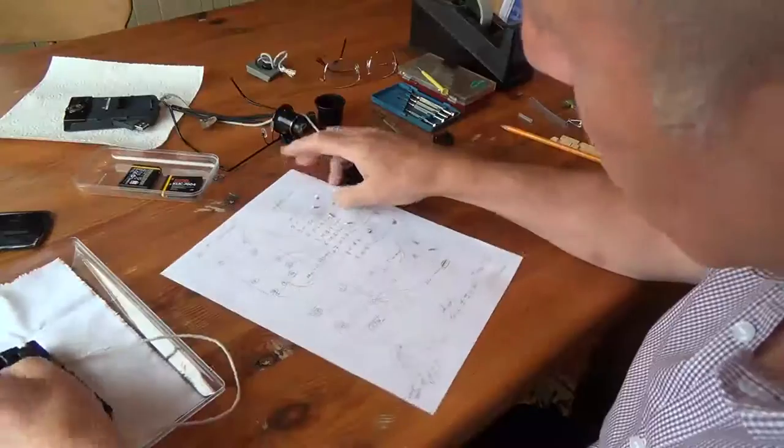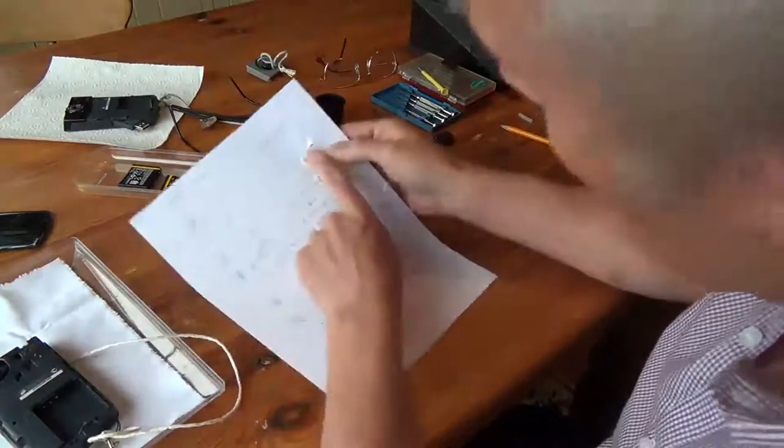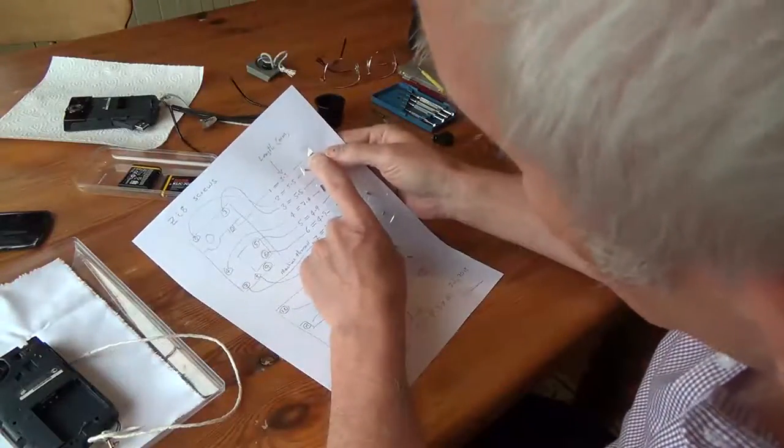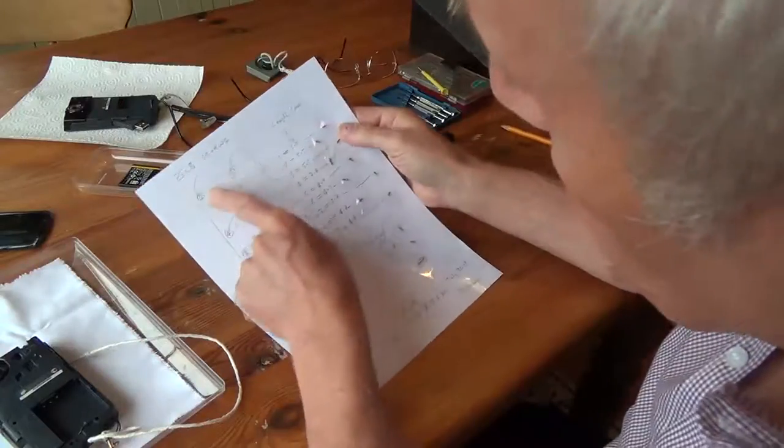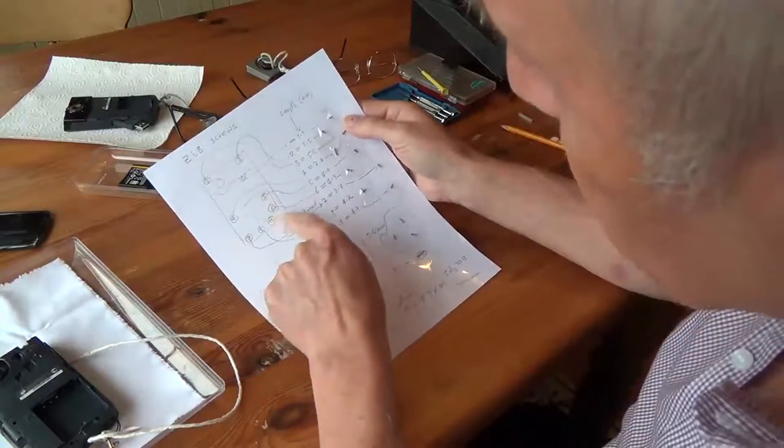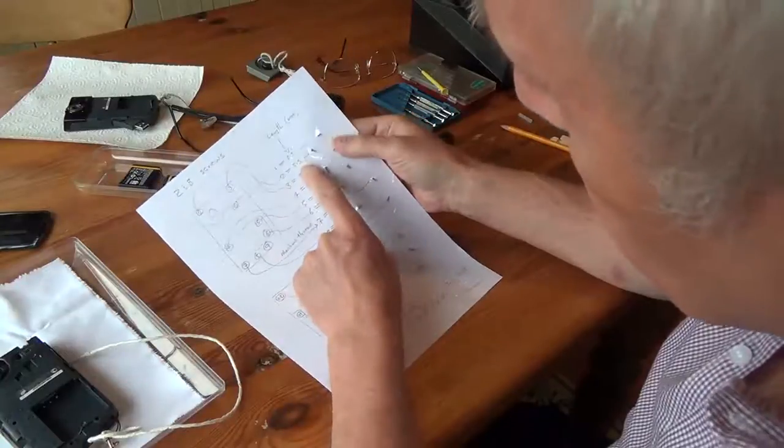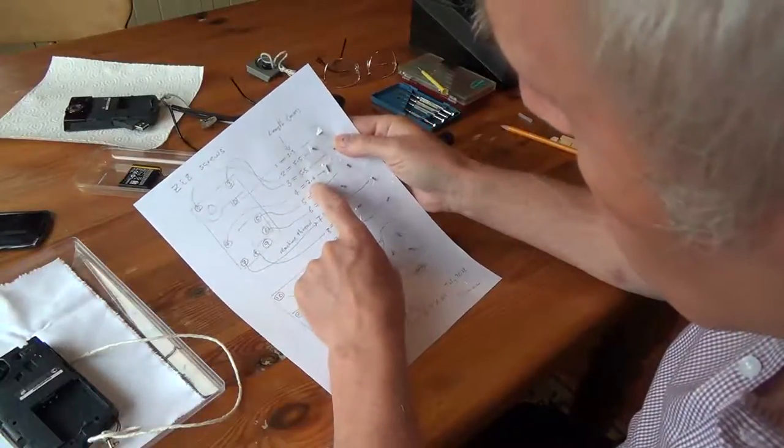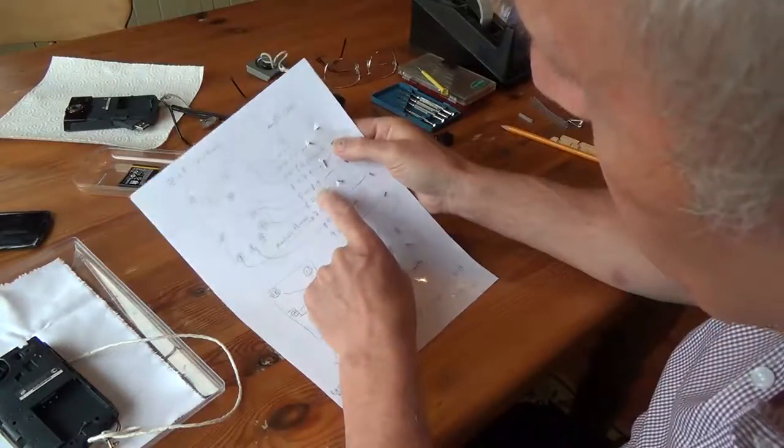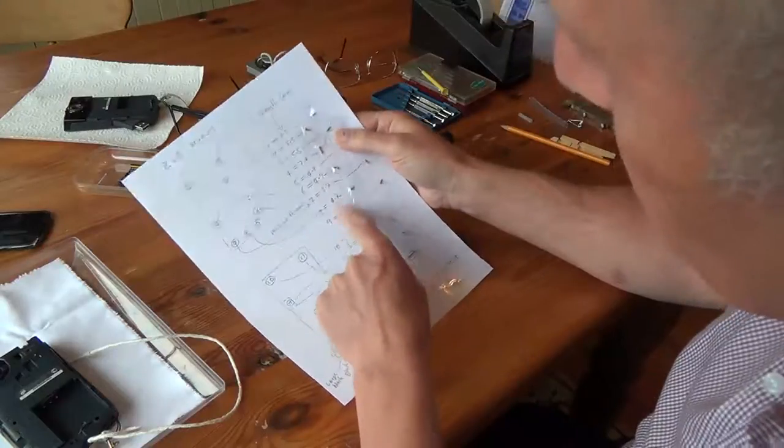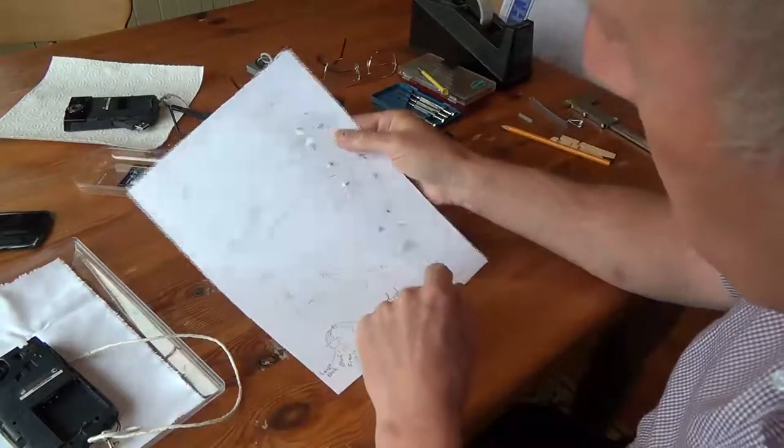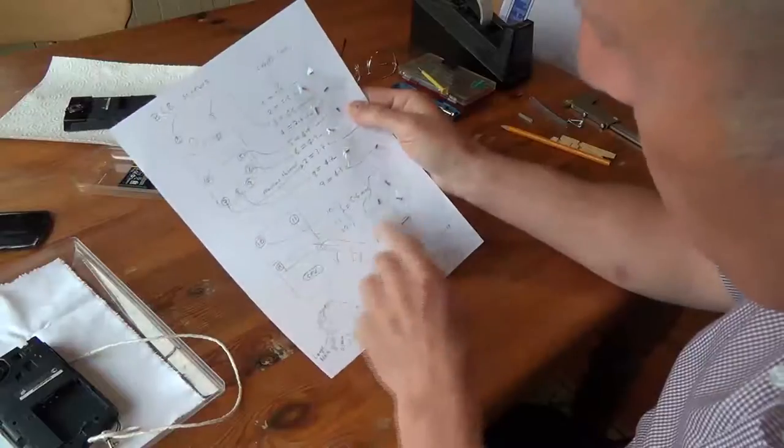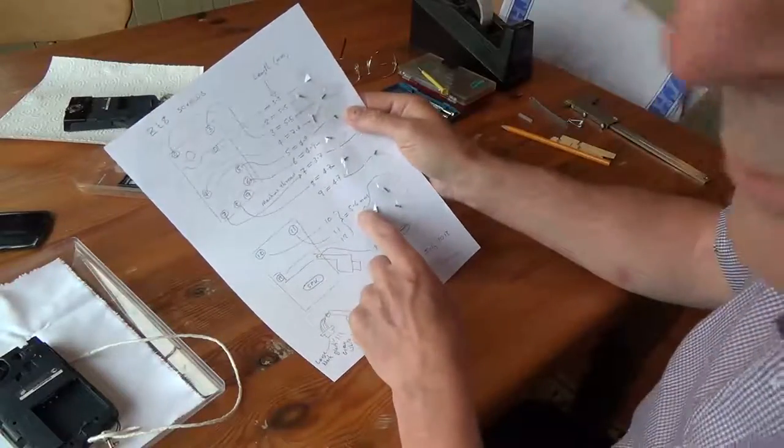Now that little screw is 3.3 millimeters long. These other screws that we're going to take out some are 5.2, 7.4 millimeters long, 4.9, 3.7, 4.7, and then there's some others around the back that we're going to be taking out that are 5.6.